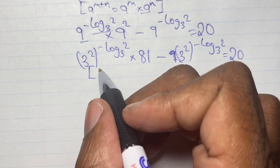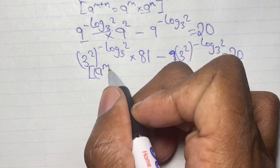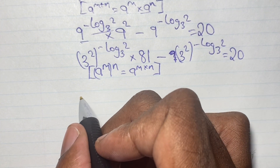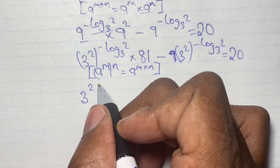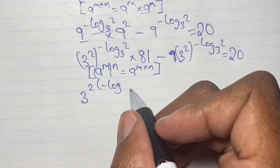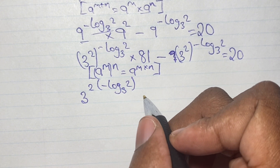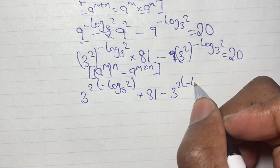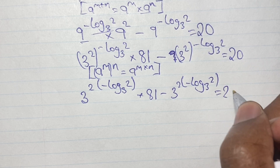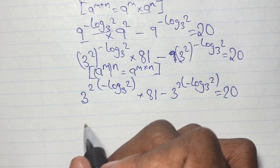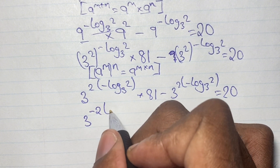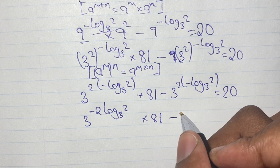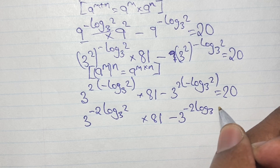Applying the index rule where a to the power of m in brackets, raised to power n, equals a to the power of m times n, we write 3 to the power of 2 times negative log base 3 of 2, times 81, minus 3 to the power of 2 times negative log base 3 of 2, all equal to 20. Expanding the brackets, we have 3 to the power of negative 2 log base 3 of 2, times 81, minus 3 to the power of negative 2 log base 3 of 2, all equal to 20.